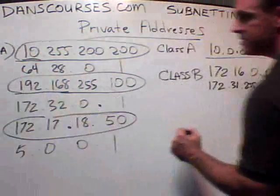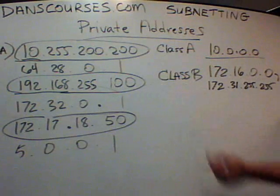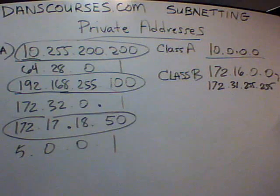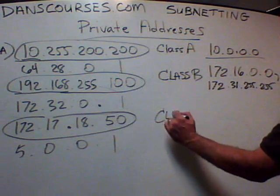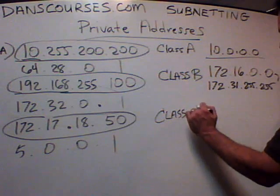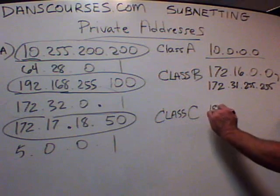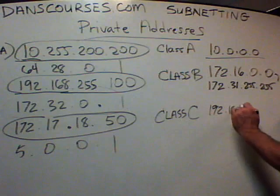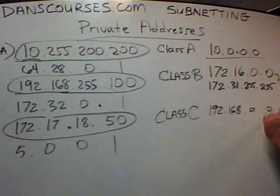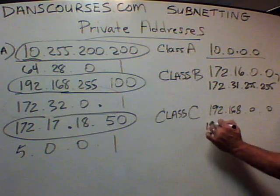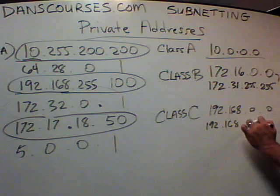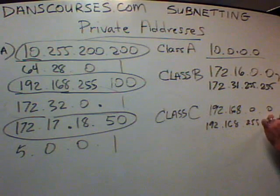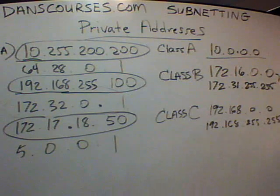192.168.255.100 — that is a private address. Class C private address — you've probably seen it on your home network. If it starts with 192.168.0.0, all the way up to 192.168.255.255, it is private, meaning it's not routable on the internet.